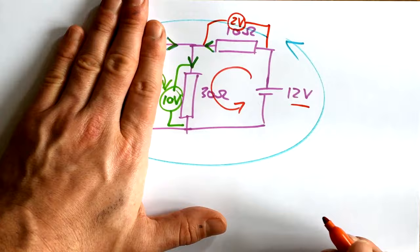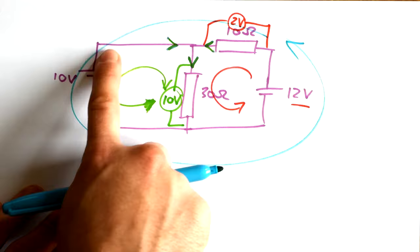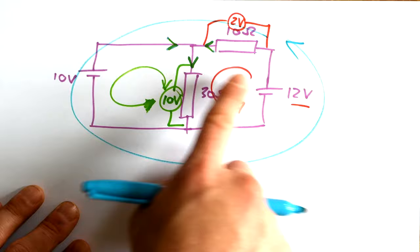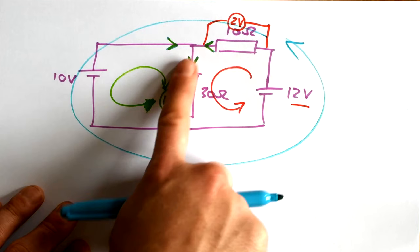Let's consider the big loop, forgetting about the resistor in the middle. Here we have a 10 volt battery pushing this way, 12 volt battery pushing this way. So overall the total EMF of this big loop is 2 volts. So therefore, if we're just concerned with this resistor at the top, it has to have a PD drop of 2 volts. And we've already seen that that is correct.